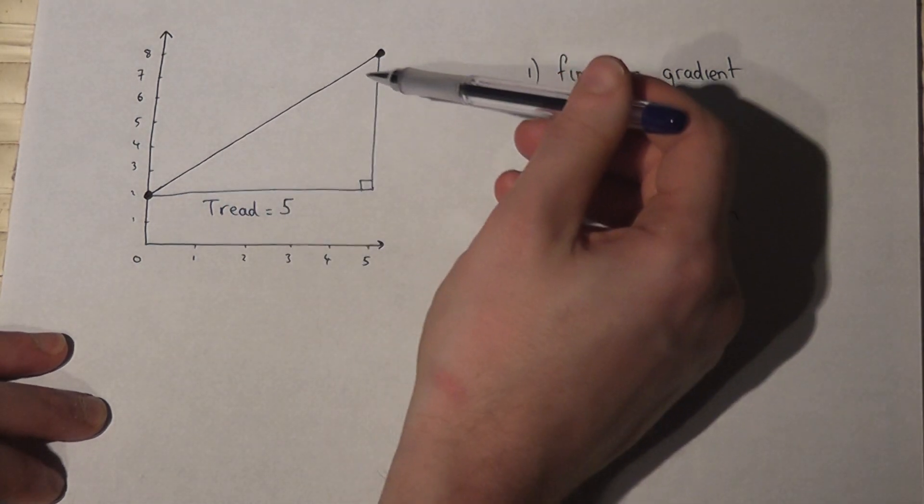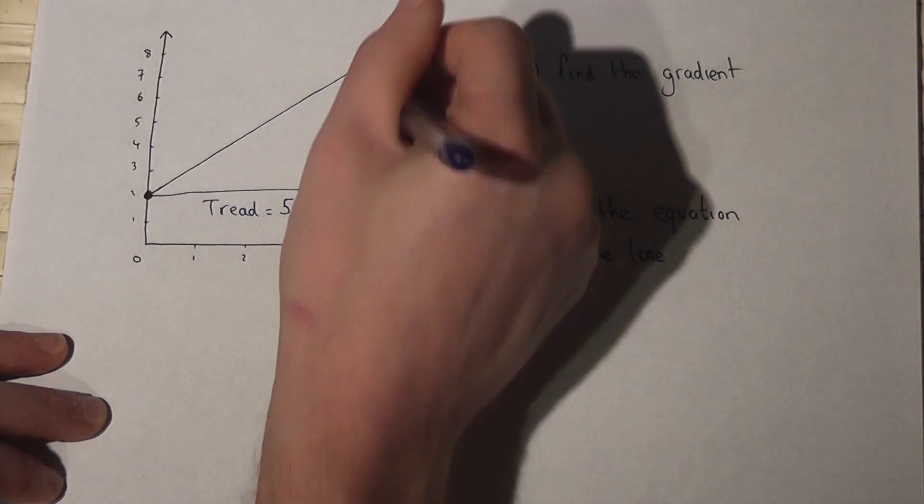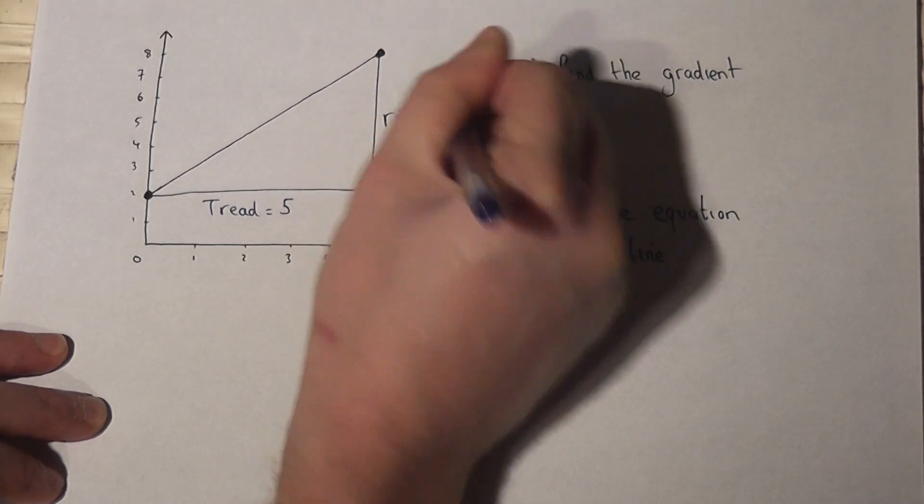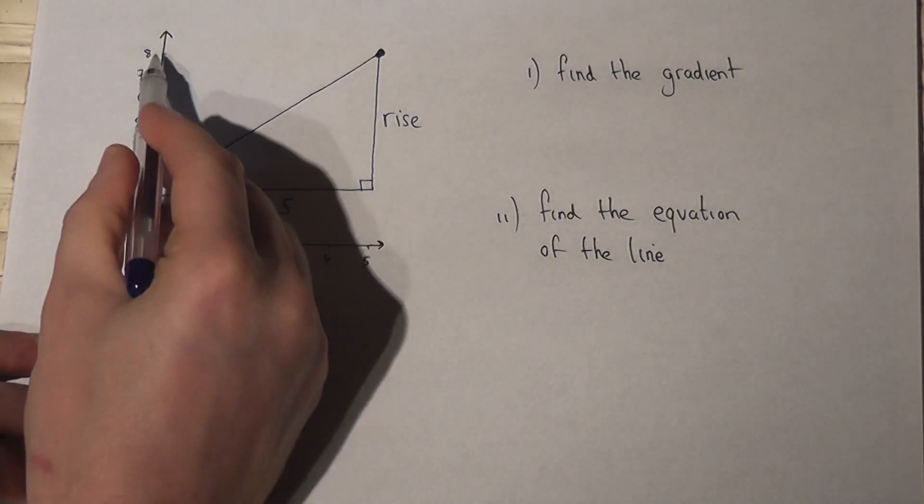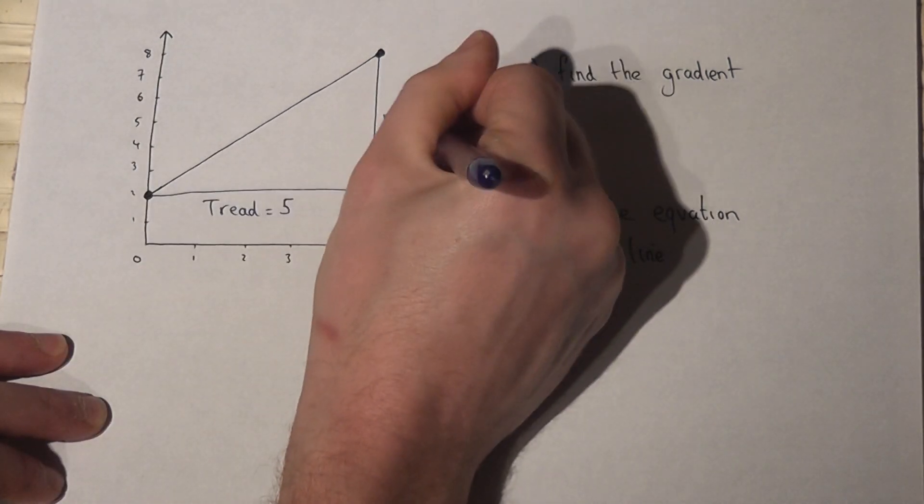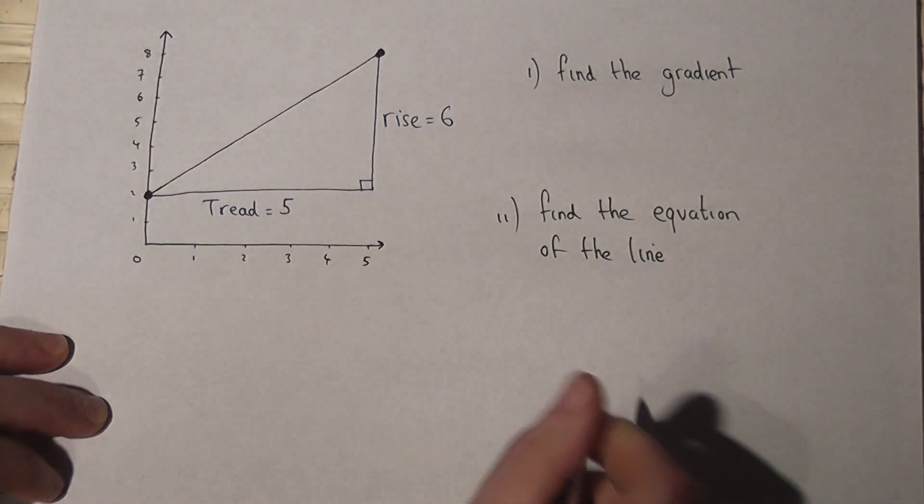We then work out how high the triangle is, that is called the rise. So from 2 to 8, 8 take 2 is just 6.